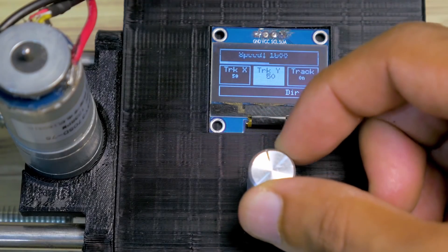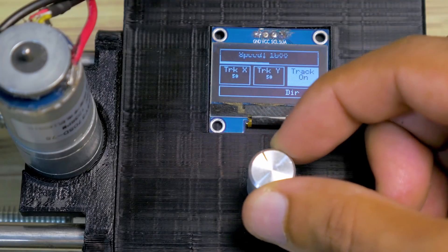The menu I've designed looks like this. Twisting the rotary encoder here allows us to navigate the different options.